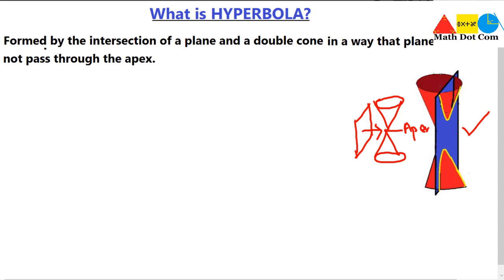The apex is basically this point where the two cones meet each other. One more condition is that the plane should be parallel to the axis of the cone. The axis is this line running through the center of the cone. So the plane should cut the two cones while remaining parallel to the axis.